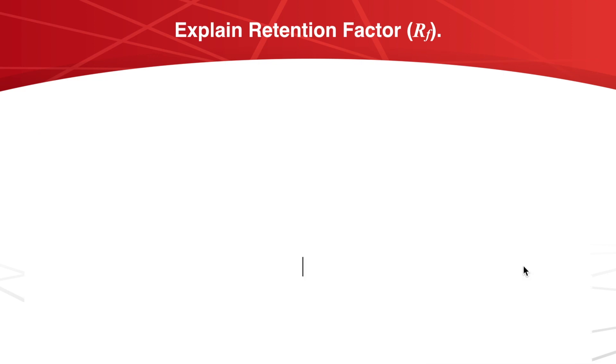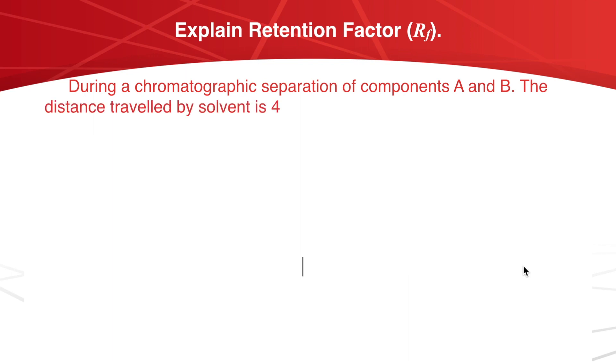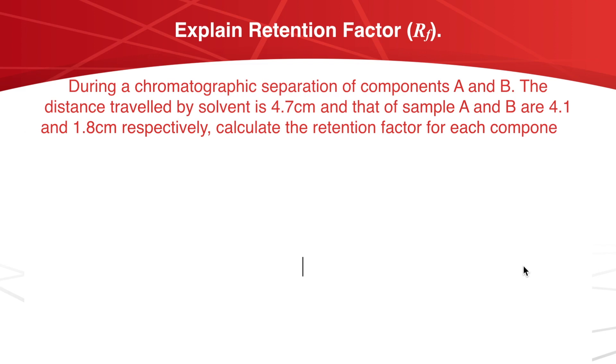Let's take one example to have better understanding. During a chromatographic separation of component A and B, the distance travelled by solvent is 4.7 cm and that of sample A and B are 4.1 and 1.8 cm respectively. Calculate the retention factor for each component.